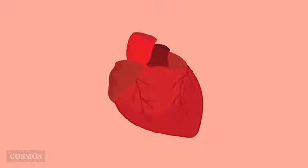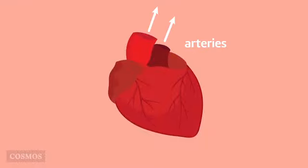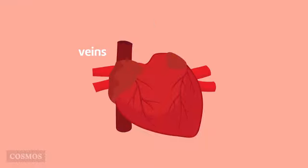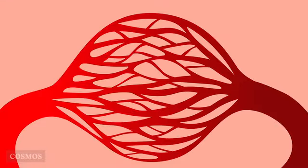The blood flows through a system of branching tubes called blood vessels, of which there are three types. Arteries carry blood away from the heart, while veins carry it back.